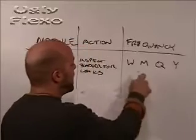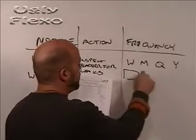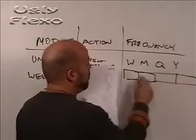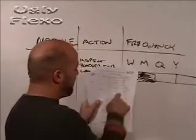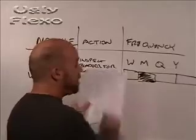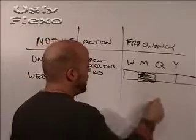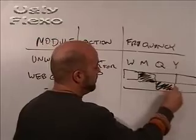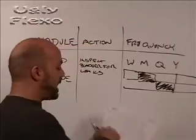And so where they have squares like this, and one of them is blacked out, you're going to perform that task perhaps monthly. If another one is blacked out here, you may perform that given task quarterly.